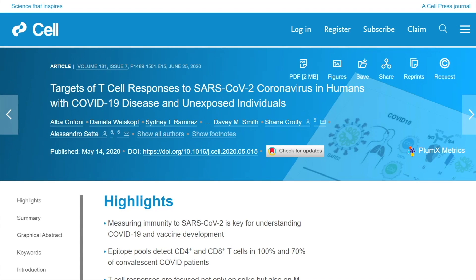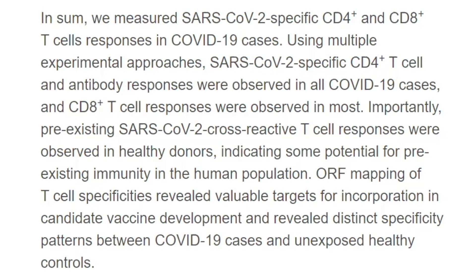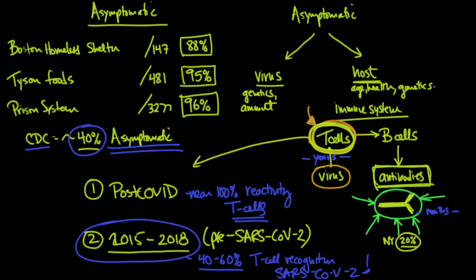Is it possible that patients who have had previous exposure to similar viruses to the SARS-CoV-2 have a T cell response already ready to go? And that is evident in this blood sample that we see here from 2015 to 2018. Well, it would seem as though the answer to that question is yes. I'll of course let you look at the article yourself, but they sum it up here at the end of the discussion. They say, in sum, we measured SARS-CoV-2 specific CD4 and CD8 T cell responses in COVID-19 cases. Using multiple experimental approaches, SARS-CoV-2 specific CD4 positive T cell and antibody responses were observed in all COVID-19 cases, and CD8 positive T cell responses were observed in most.